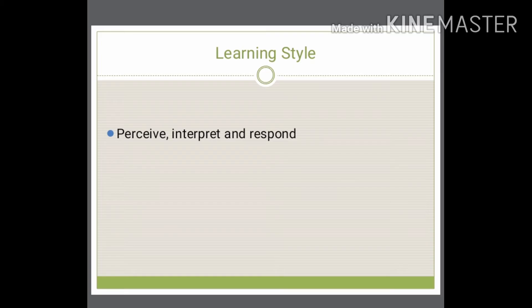The fourth pillar is learning styles — how an individual is inclined to perceive, understand, interpret, and respond to information. There is active experimentation, visualizing abstract ideas, and concrete experience — learning by doing. Both concrete experience and abstract conceptualization lead to reflective observation. People tend to learn differently: some by doing, others by simply visualizing concepts.